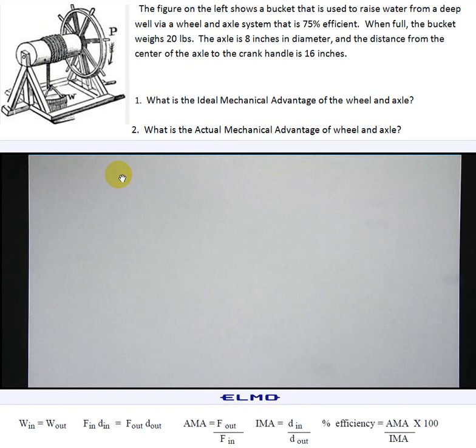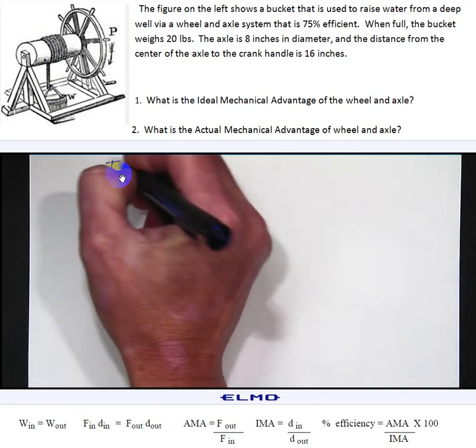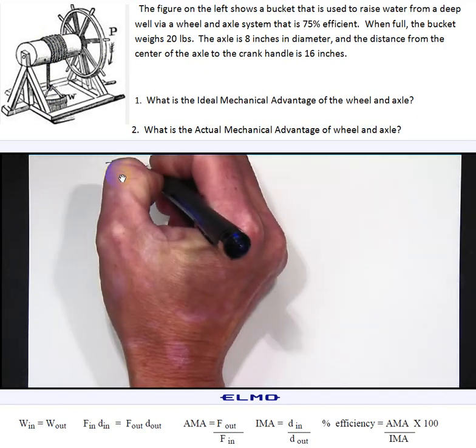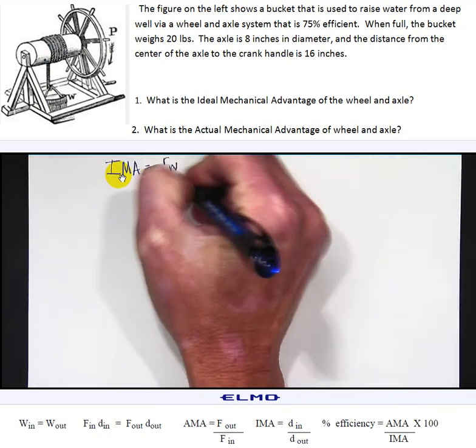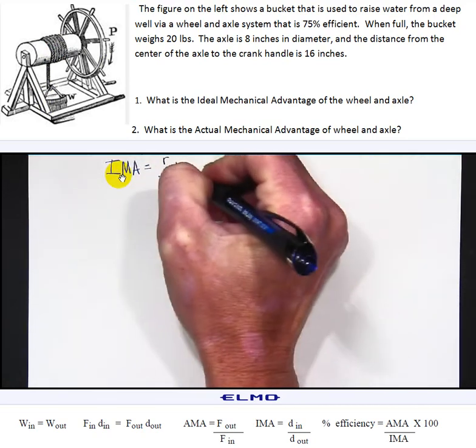So our formula for ideal mechanical advantage, since the wheel is driving the axle, is the radius of the wheel divided by the radius of the axle.